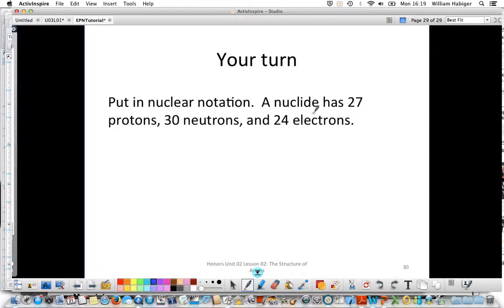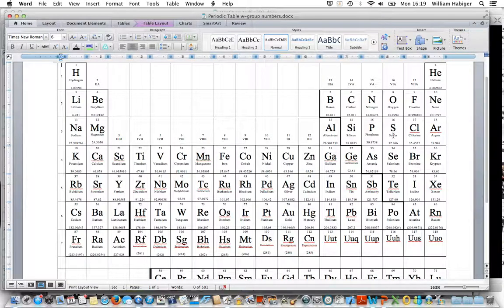Oh, we have a nuclide that has 27 protons and 30 neutrons. So we know that the mass number is going to be the protons plus the neutrons. So 27 plus 30 gives us 57. We know that the atomic number is 27 because that's the number of protons. So that goes on the bottom. We have to look up what element it is. So we're looking for 27. That's going to be cobalt.